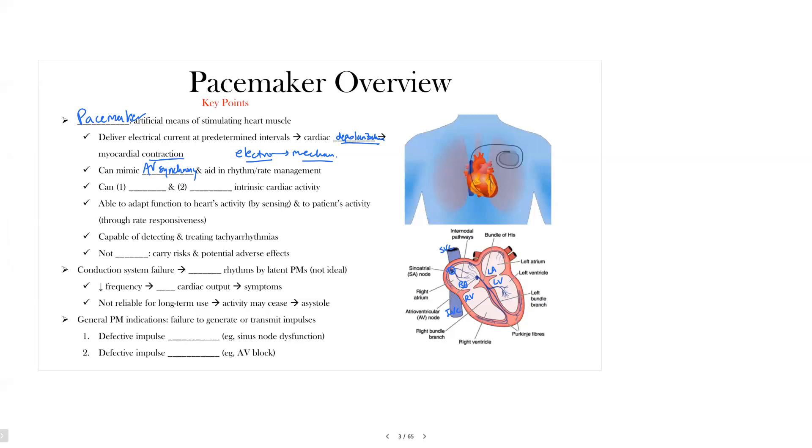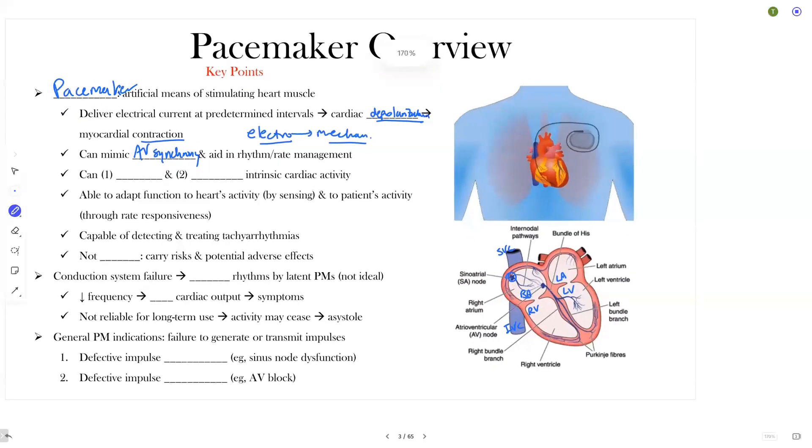The other things they essentially do, when you think of pacemakers, do two things. The two things that they do is that they sense activity or detect activity, and then they can also trigger activity. So if you can't form an impulse, as we mentioned with sinus node dysfunction, they can trigger it. The other thing is that they're able to adapt to the function of the heart by sensing, so detecting activity, into the patient's activity through rate responsiveness. So if the patient needs more activity or more oomph from that heart, it could increase that activity. Remember that they're capable of detecting and treating tachyarrhythmias, but the important thing here is that pacemakers are not benign.